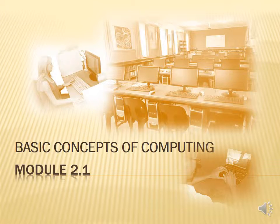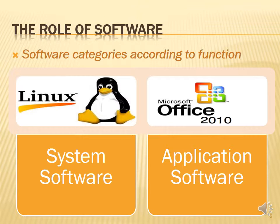We're now going to look at the basic role of software in computing. There are two categories of software: system software and application software. System software is used to manage your computer system — it controls the operation of the computer. You can't use any computer without some form of system software. However, it is software that you don't personally use; you don't run it or manage it.